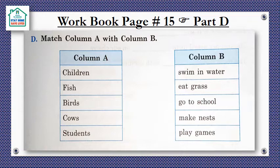Let's move on to part D: Match Column A with Column B. There are naming words in Column A and action words in Column B. Column A has: children, fish, birds, cows, students. Column B has the action phrases: swim in water, eat grass, go to school, make nests, play games.